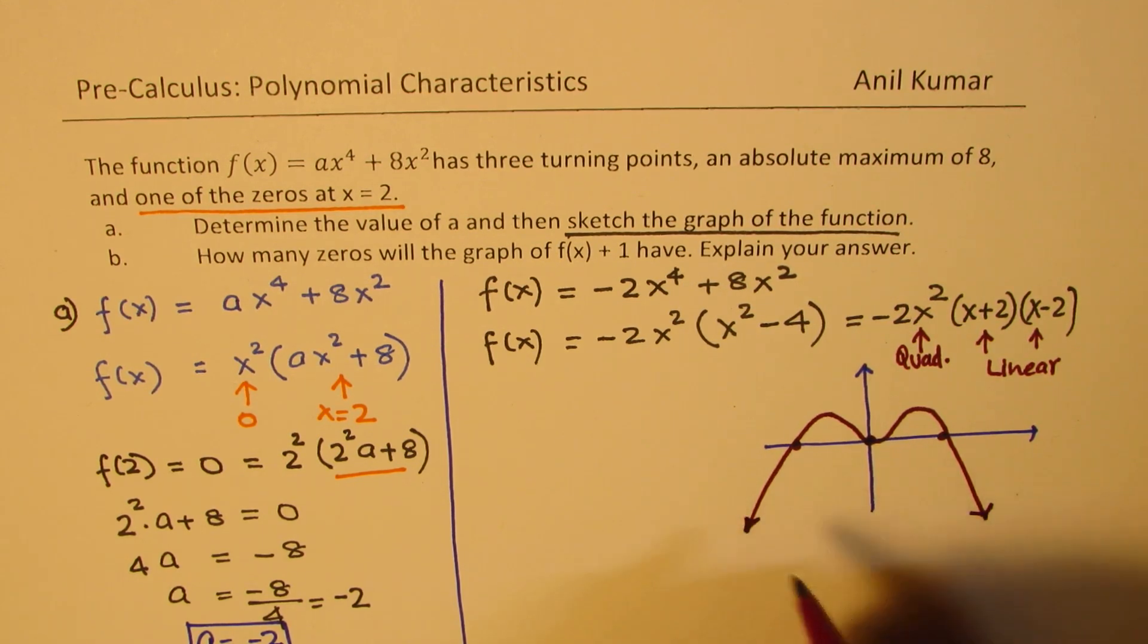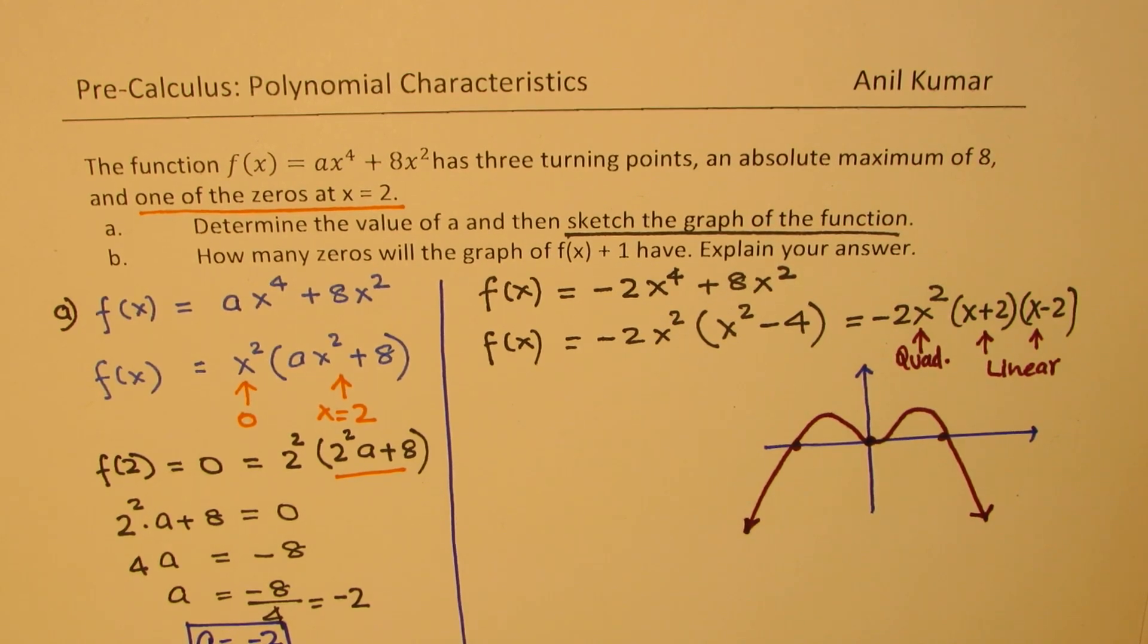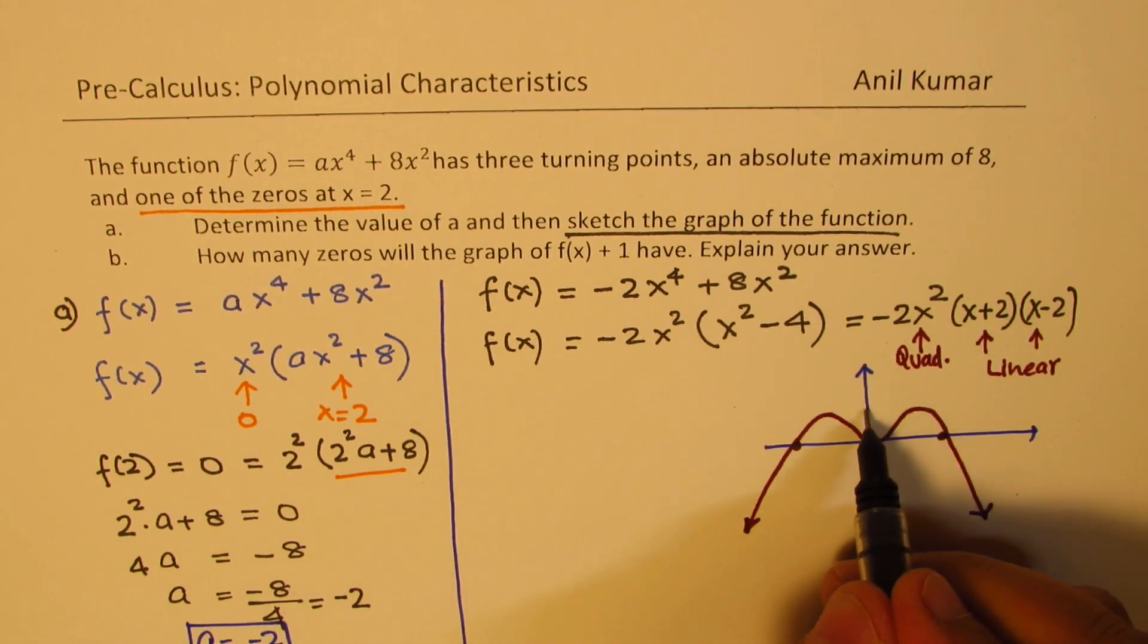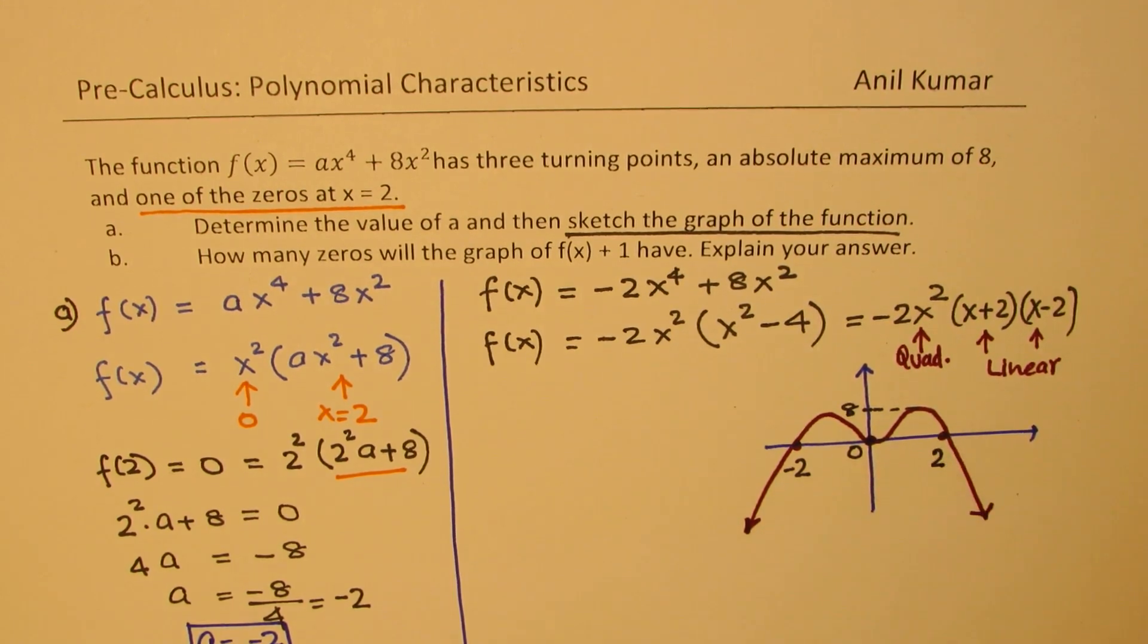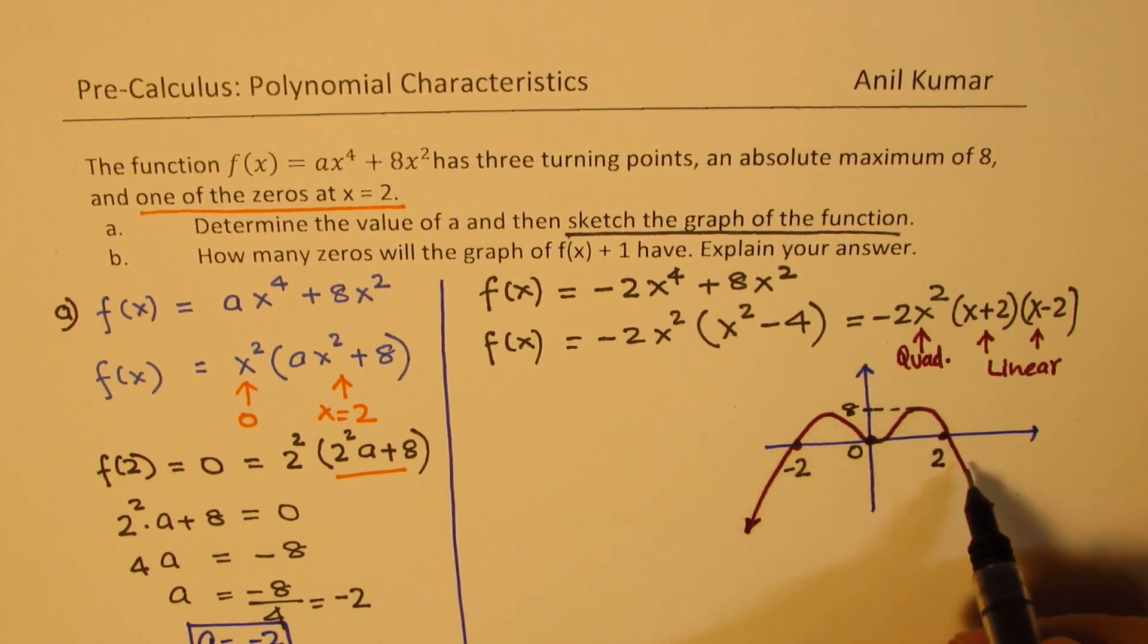It has even symmetry. And what we are given also is that the maximum, the absolute maximum is 8. So this is the absolute maximum of 8. That is 0, and this point here is minus 2, the other point is 2. So that becomes our function.